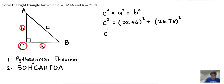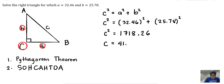C squared is equal to 1718.26. Taking the square root of both sides, C is therefore equal to the square root of that answer, which to two decimal places is 41.45. We have now solved for C, so C equals 41.45.